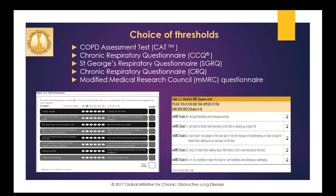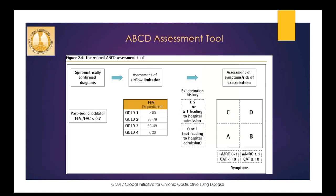The guidelines mention several tools for assessing the impact COPD is having on a patient's life. The two most commonly used in practice and research are the COPD assessment test, or the CAT score, and the Modified Medical Research Council questionnaire, often seen as the MMRC. Both are brief questionnaires and are self-administered. Either one can be used when assessing a patient's risk stratification.